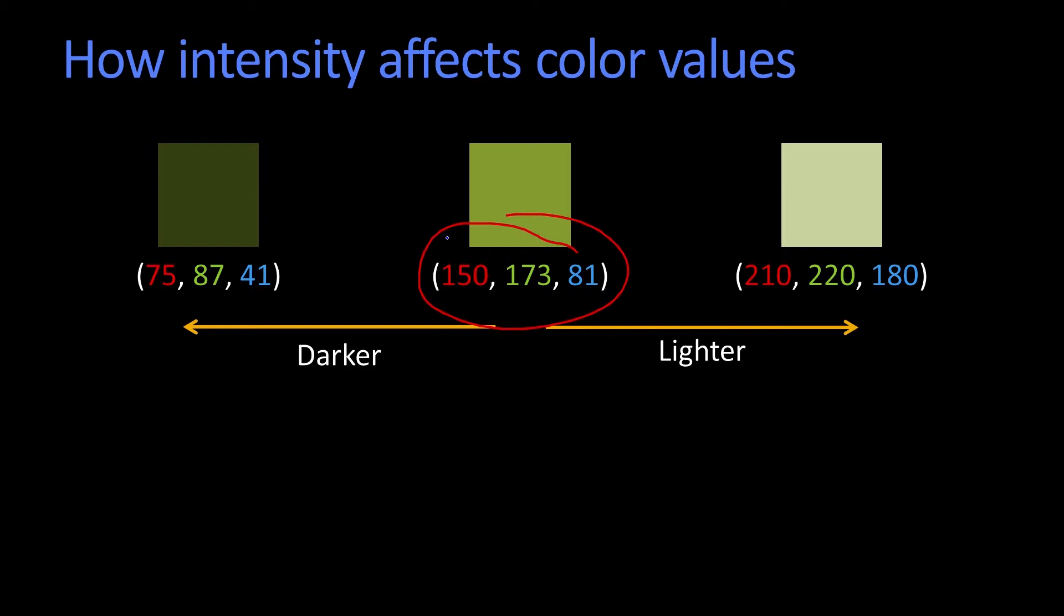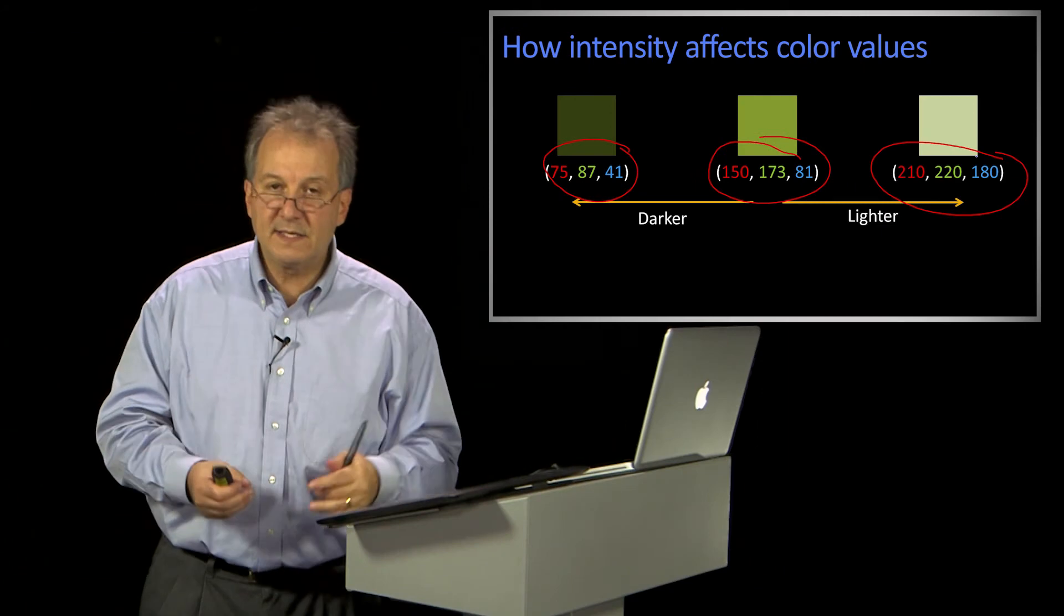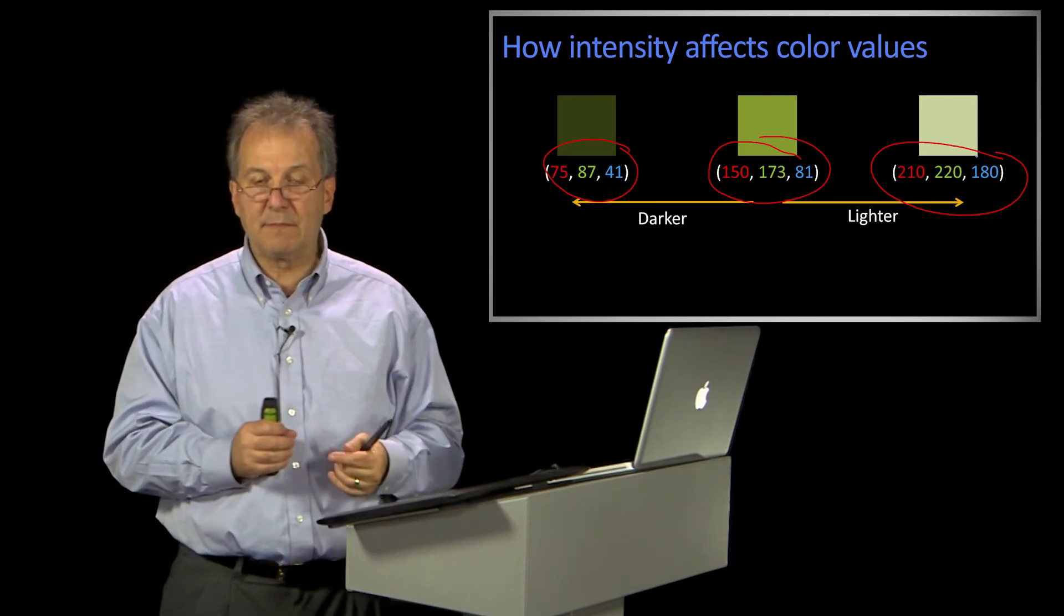So in a nice sort of green in the middle, we get this nice separation between these values. But as things get darker, they get closer. And as they get brighter, they get closer. Why is it as they get darker, they get closer? And as they get brighter, they get closer?